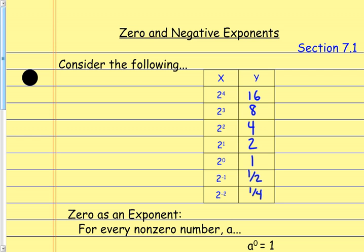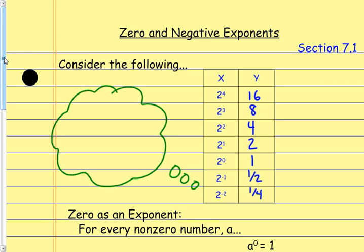And that tells us a couple things. 2 to the zero power being 1 is significant. But also, when we look at these negative exponents — if I have 2 to the negative first power, that eventually equals 1 half, and 2 to the negative second power eventually equals 1 fourth — I think of that as 1 over 2 to the first power, and this one as 1 over 2 to the second power. So it shows us a little something about how negative exponents work.